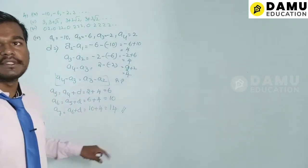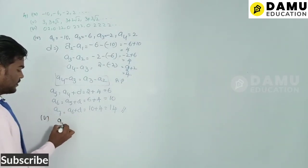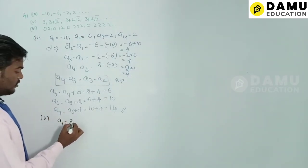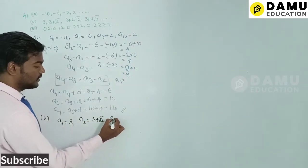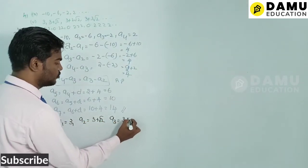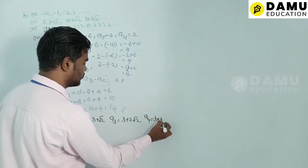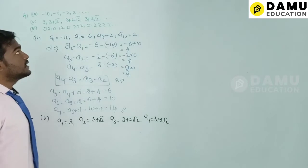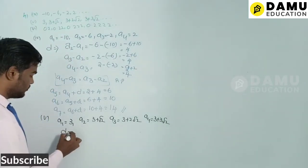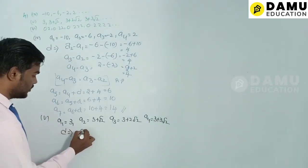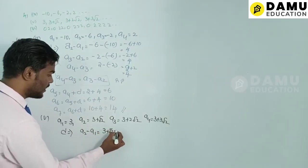For the fifth series: a1 = 3, a2 = 3 + √2, a3 = 3 + 2√2, a4 = 3 + 3√2. Now let's find the common difference.